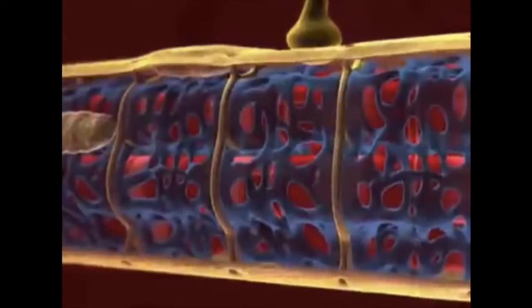This is how a muscle cell responds to action potentials in the motor neuron. When many muscle cells contract together, the result is movement.